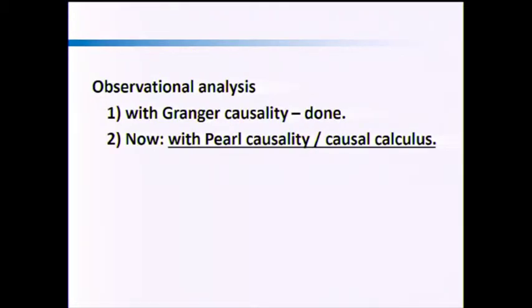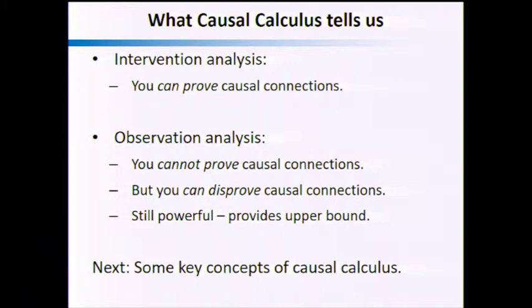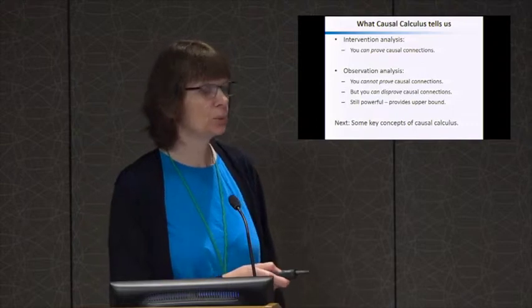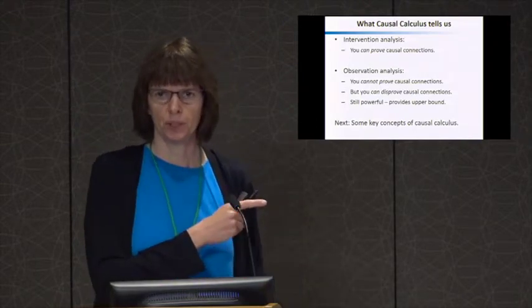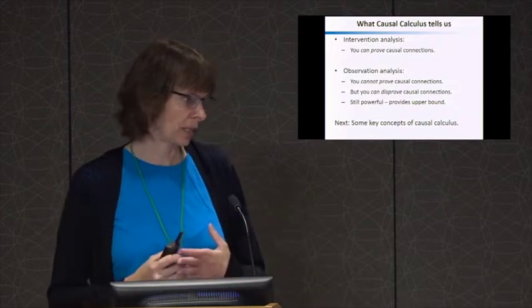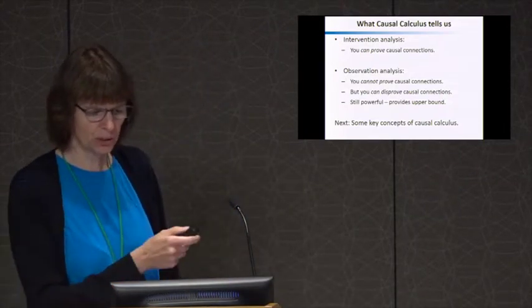For example, for Matthias's problem this may be a first solution: run LASSO, look at which ones are non-zero, and those variables should be in your conditioning set — done. If your key concern is predictability, you're done. Now, what causal calculus tells us is: if you have intervention analysis, you can actually prove causal connections — you do appropriate interventions, and assuming your model is flexible enough, you can prove or disprove causal connections. That's the gold standard. If you only have observations, you can't prove causal connections — the main reason is there can always be hidden common causes. But you can still disprove causal connections, which is still powerful and provides an upper bound on what causal relationships can exist.